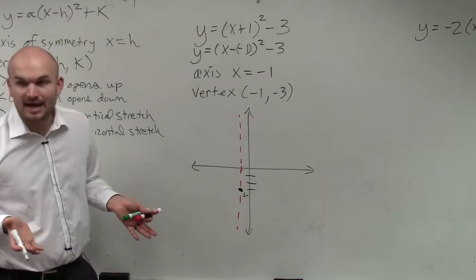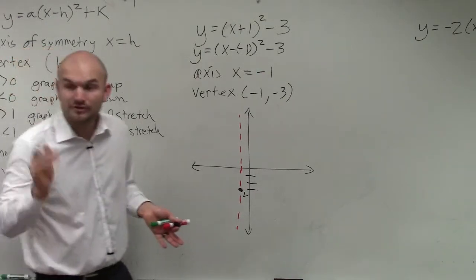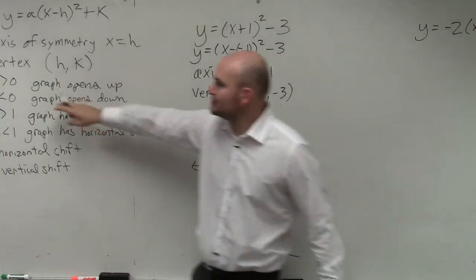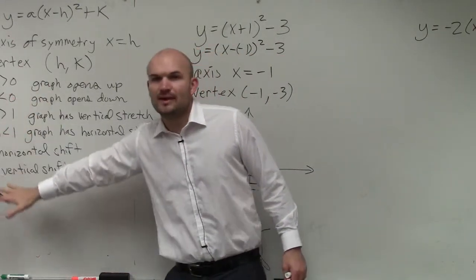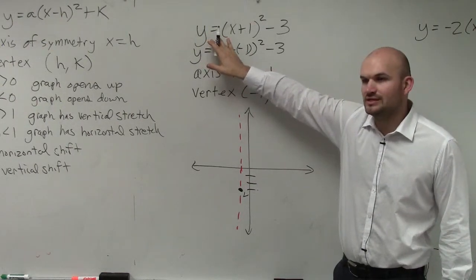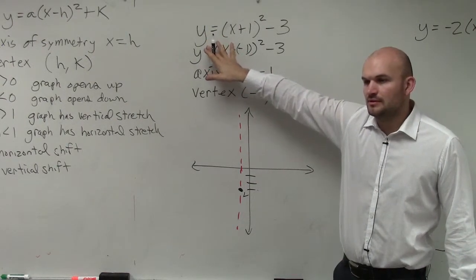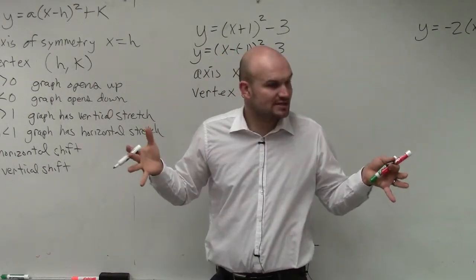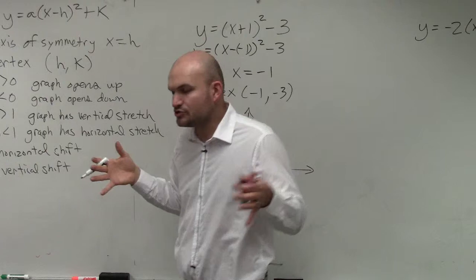Now, what we need to do is go ahead and graph this. Now, there's one important thing that I didn't mention to you guys. Ladies and gentlemen, remember, we look at all these rules that we have for A. Is there anything that we have in A other than 1 in this case? No. So we don't have any horizontal compression. We don't have any horizontal stretching at all.